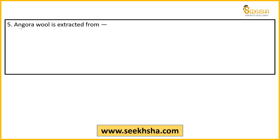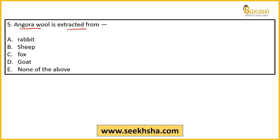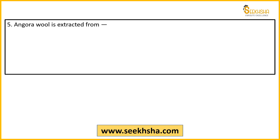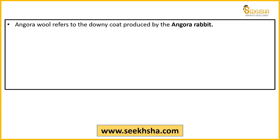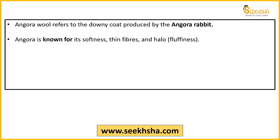Fifth question: Angora wool is extracted from which animal? Options are rabbit, bee, sheep, fox, deer, goat, or none of the above. This is a factual question. The answer is rabbit — angora wool is extracted from the angora rabbit. This breed is specifically called the angora rabbit.